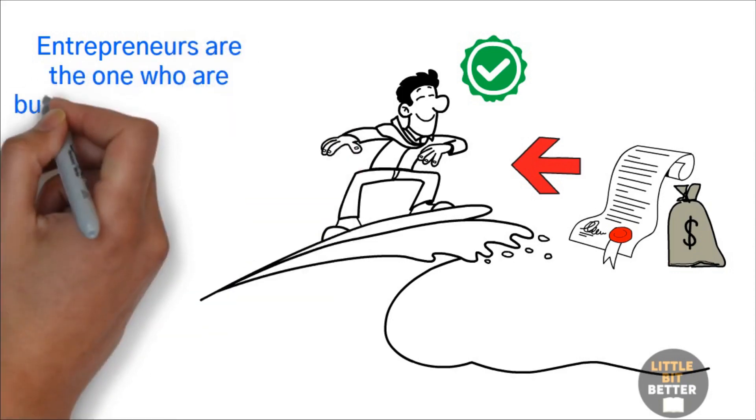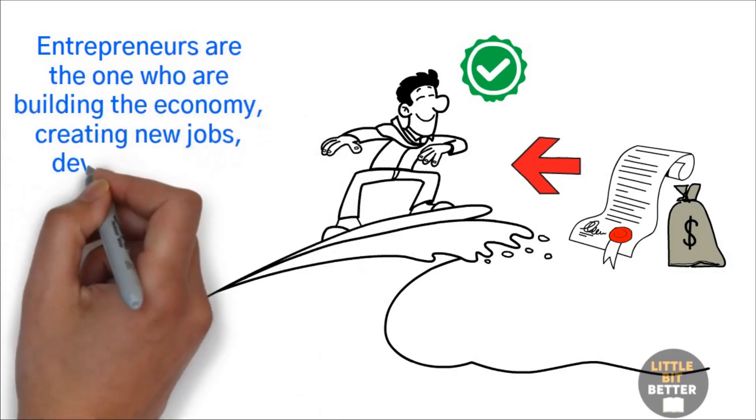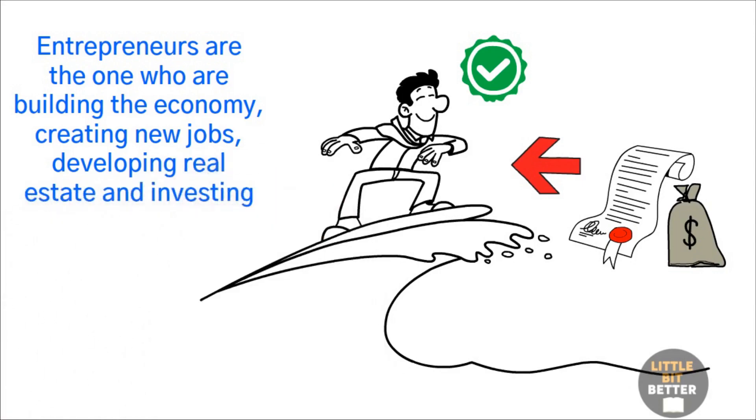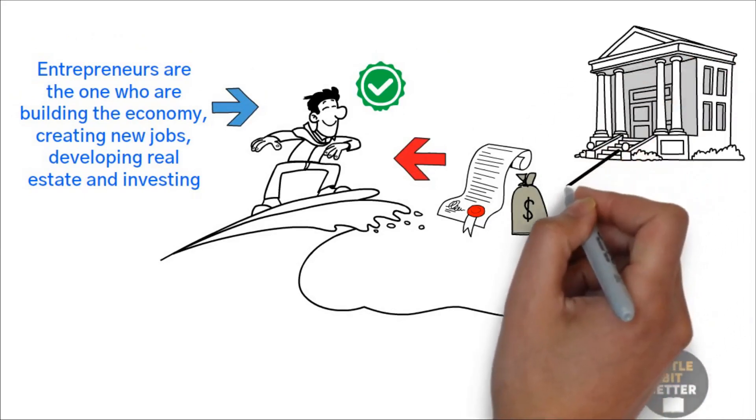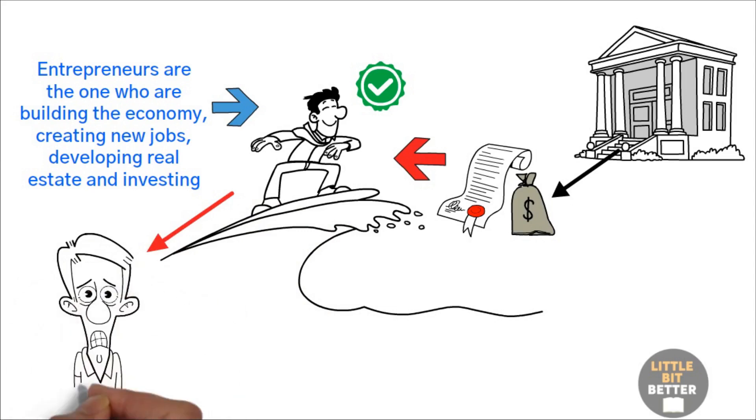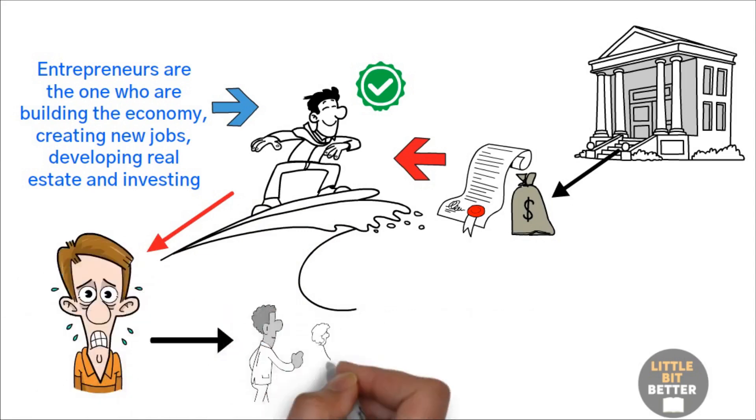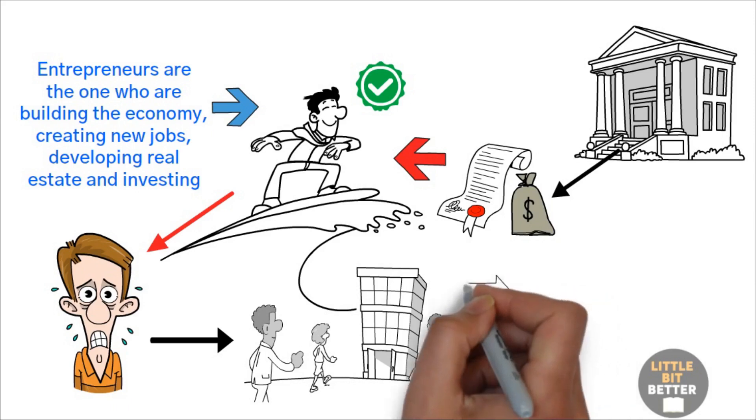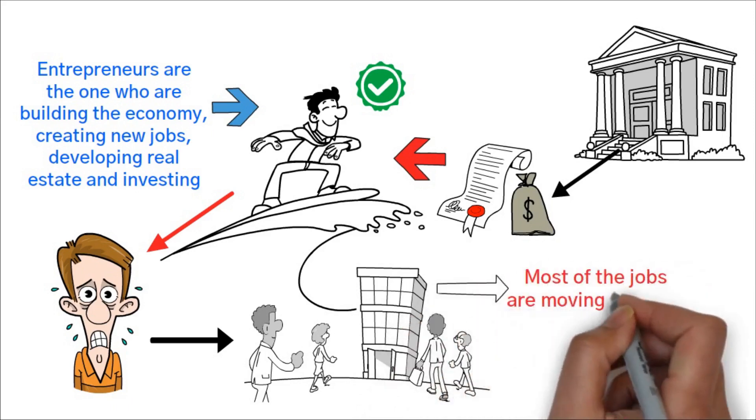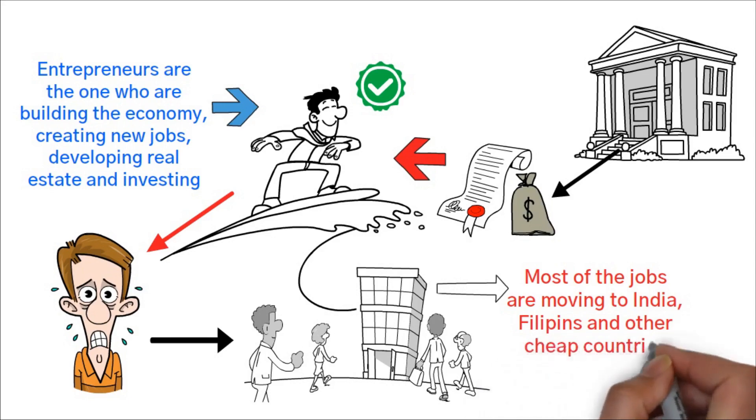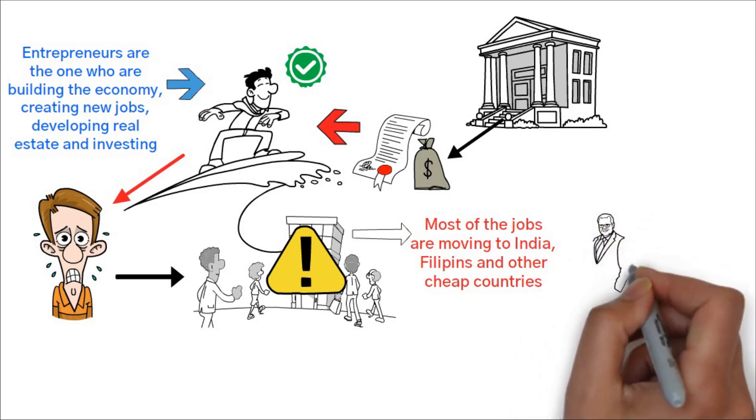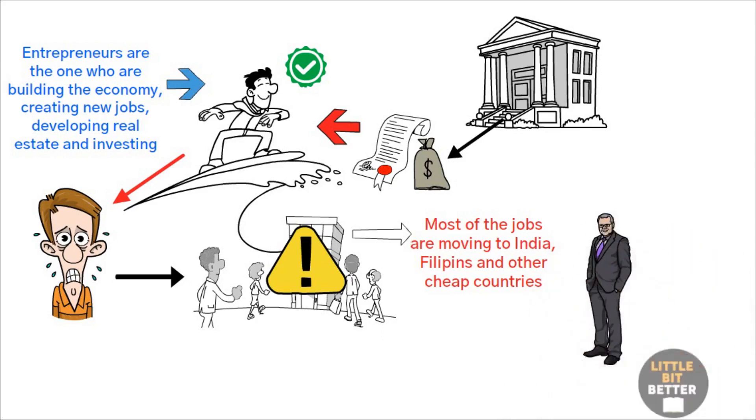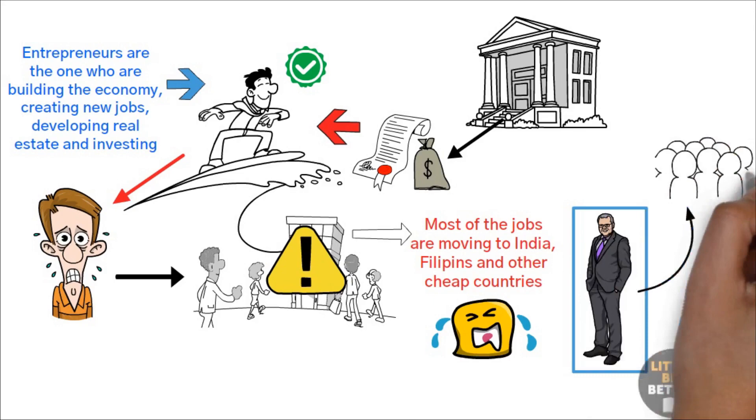The author strongly advises becoming an entrepreneur because taxes and law are written in favor of entrepreneurs. Entrepreneurs are the ones who are building the economy, creating new jobs, developing real estate, and investing. Government needs entrepreneurs otherwise there would be no jobs and government could not collect taxes. Many people think becoming an entrepreneur is risky so they want a secure job in a company. But there is no secure job thing anymore. Most of the jobs are moving to India, the Philippines, and other cheap countries. Having a job is actually riskier than becoming an entrepreneur because when you have a job, you only have one client and that is your employer. If he fires you, then you are in deep trouble. But if you are an entrepreneur, you have many clients.